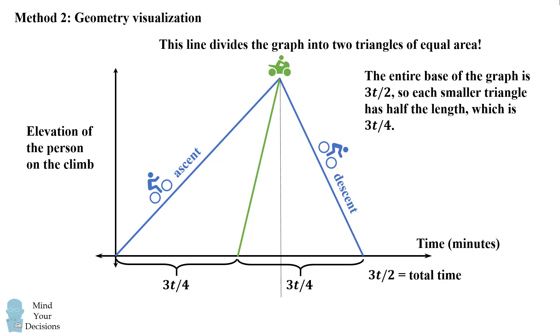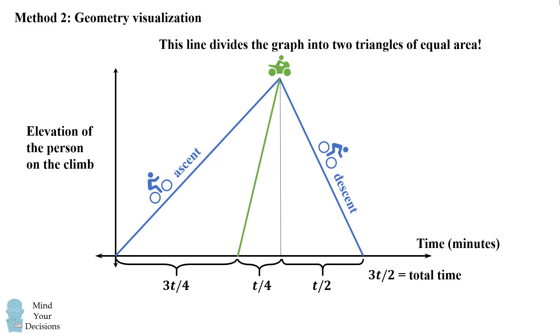Now recall that the cyclist takes t minutes to reach the top and t over 2 minutes to descend. So we can use these values to deduce the lengths between when the motorcycle starts and reaches the top. So this particular length will be t over 4.